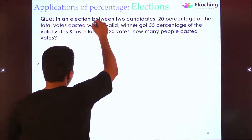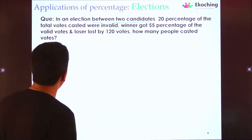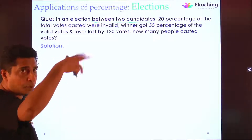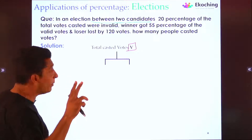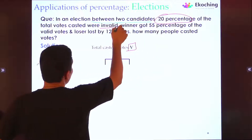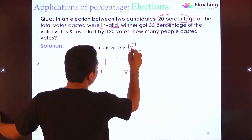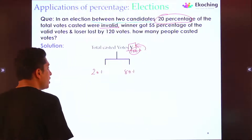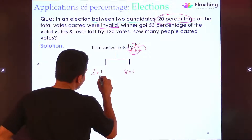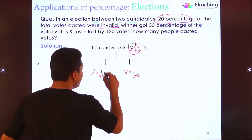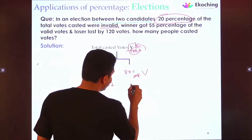Total votes cast = V (100%). From V: 20% of V is invalid votes, 80% of V is valid votes. Now for further bifurcation of valid votes — the question says 'winner got 55% of valid votes.' The key point here: 'of' is followed by 'valid votes,' not total votes. So the base here is valid votes, not V. Let's call valid votes P — a new quantity, itself 100%.